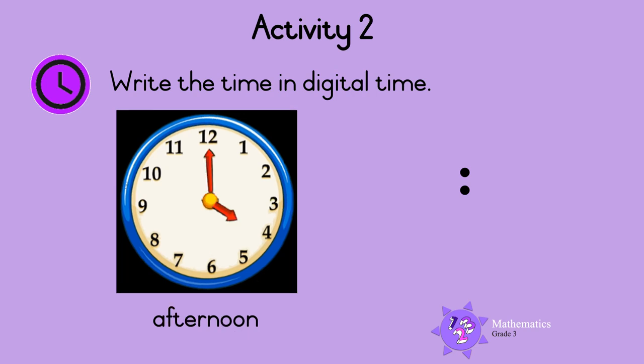Here is another one. The minute hand points to 12 — this shows 0 minutes. The hour hand is exactly on 4, so it is 4 o'clock. But it's 4 o'clock in the afternoon. So this is how we show 4 o'clock in the afternoon in digital time.